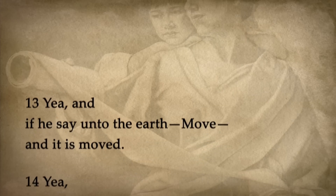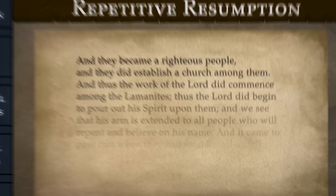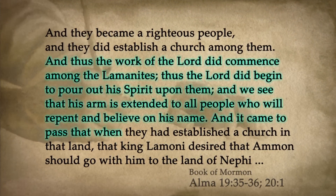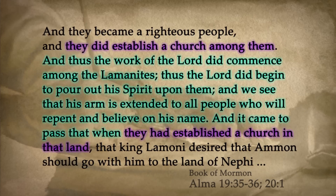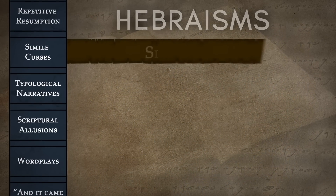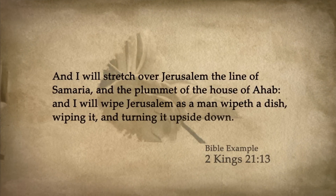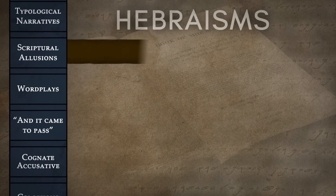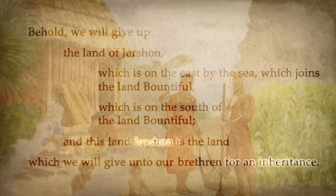Some structures are short and simple. For instance, synonymous parallelisms, such as this passage in Genesis, state an idea in one way and then repeat it using similar words. A similar structure is found in 2 Nephi. Other parallelisms are more elaborate. One structure, called gradation, repeats each successive idea until it builds to a climactic conclusion, as can be seen in this example from the Book of Joel. Moroni chapter 8 offers a similar parallel structure, which shows how the doctrine of Christ leads step by step to eternal life.